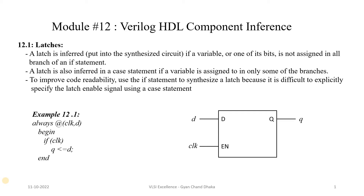First, we are going to see how a latch circuit gets inferred from an RTL code. A latch is inferred if a variable, or one of its bits, is not assigned in all branches of an if-else statement. If we have an if-else statement in our RTL code and the else statement is not properly coded, that RTL code is going to infer a latch. Similarly, in a case statement, if a variable is assigned in only some of the branches, the RTL code will also infer a latch.